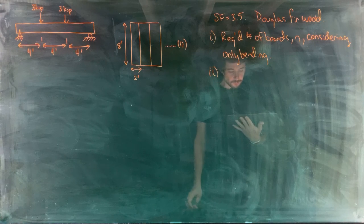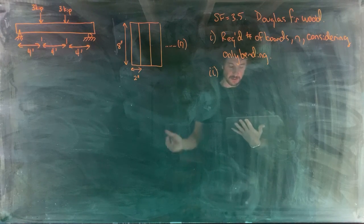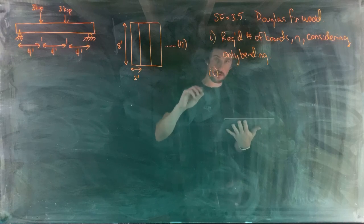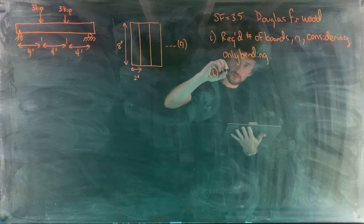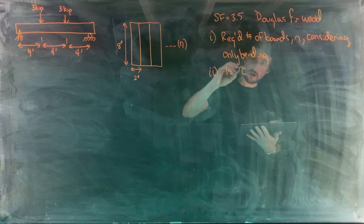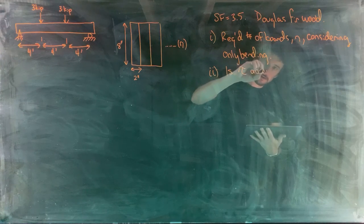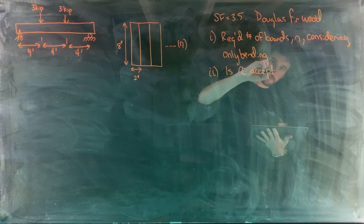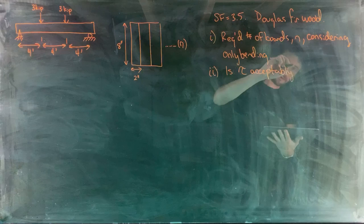Part two: for the number of boards calculated above, is the level of shear stress in the wood acceptably low — is tau acceptably low?